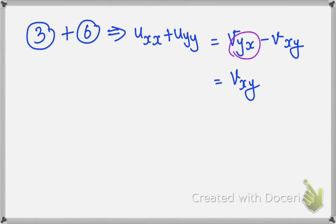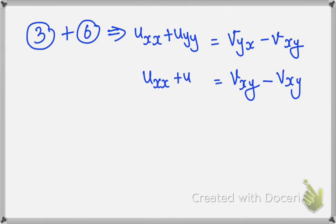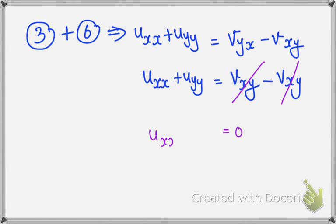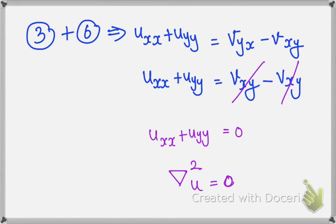Since the right-hand side has Vxy minus Vxy, these are the same terms with different signs, so they cancel to give zero. Therefore, Uxx plus Uyy equals 0, which can be written as del squared U equals 0. We have proved the first term.